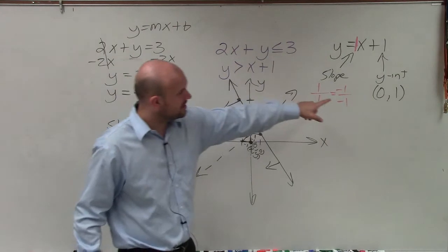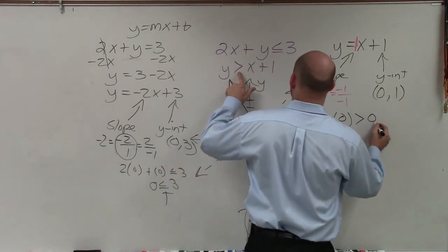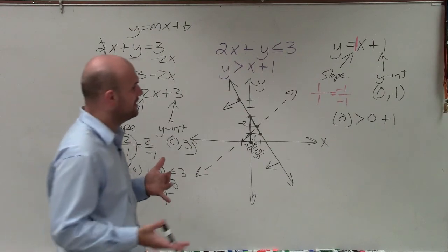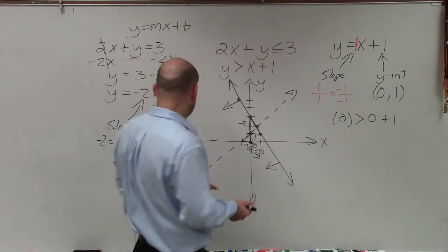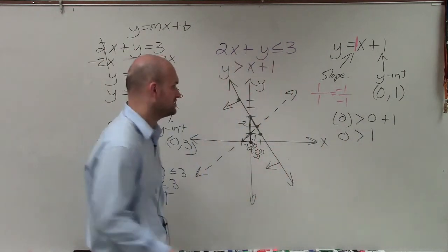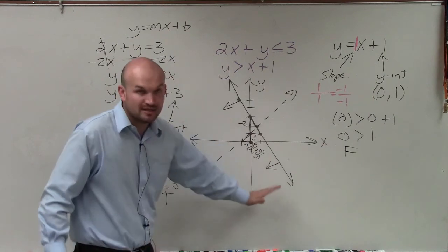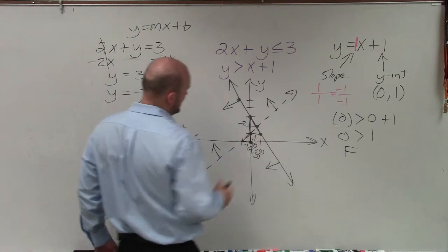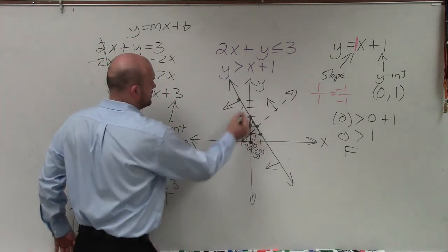Then we go to our next inequality. It's important to plug the test point into the inequality, not the equation — the inequalities determine the shading. So plugging in: 0 is greater than 1. Well, 0 is not greater than 1, so that is false. Since the test point is false for this boundary line, instead of shading where the test point is, we shade on the other side — above this line. The only region where both inequalities are true is right here, in the overlapping shaded area.